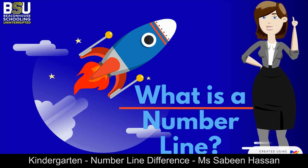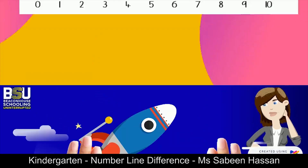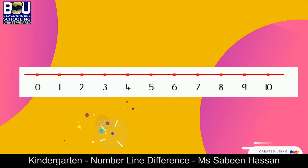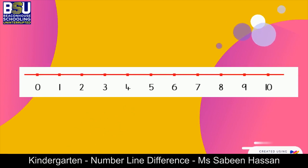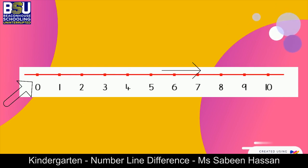Yes, okay, let me tell you. Number line, as the name suggests, is the line having the numbers over it. As you can see, it starts from zero and it keeps on increasing, going on the right side.